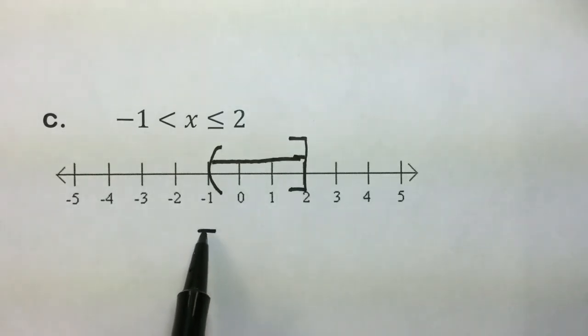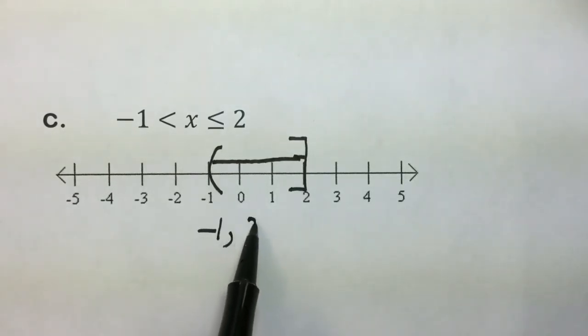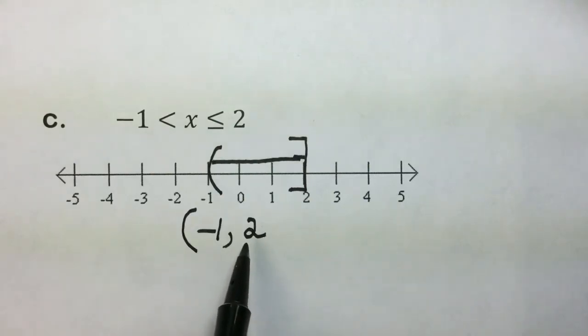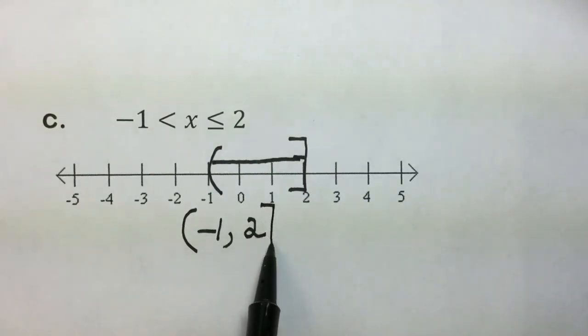The smallest value is negative 1, the largest value is 2. We do not include the negative 1, so we'll have an open interval here. And we are including 2, a closed interval here, thus we have an interval notation for the set of numbers corresponding to this inequality.